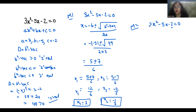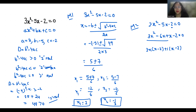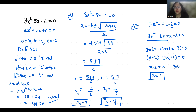So we write 3x squared minus 6x plus x minus 2 equals 0. From the first two terms, 3x is common, giving 3x(x minus 2), and from the last two terms, 1 is common, giving 1(x minus 2). So we get (x minus 2)(3x plus 1) equals 0, which gives x equals 2 and 3x plus 1 equals 0, so 3x equals minus 1, giving x equals minus 1 over 3.